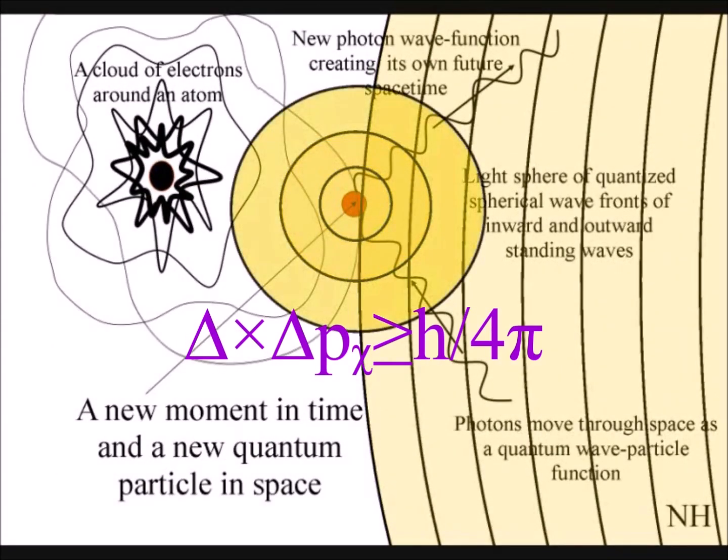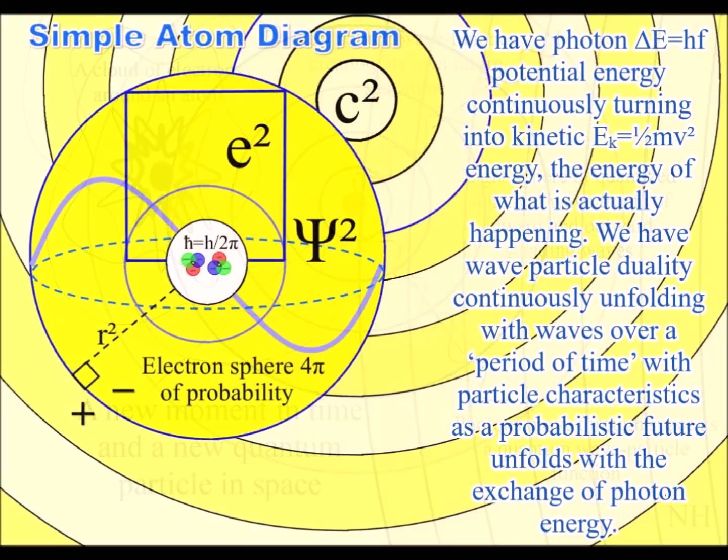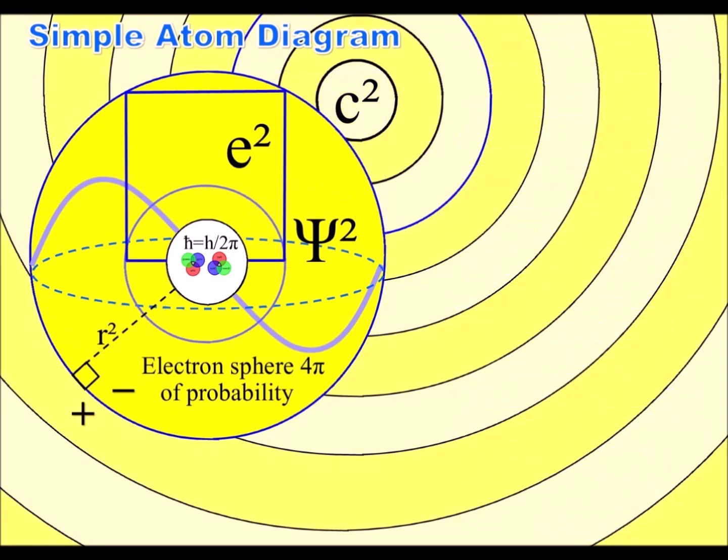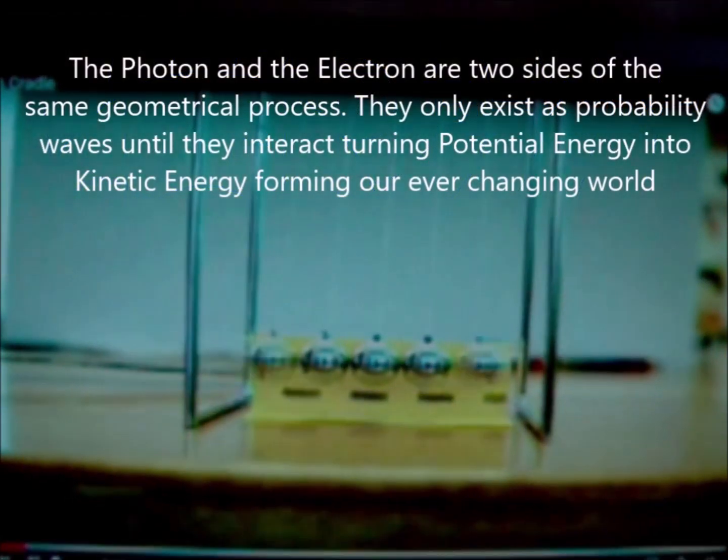We have the spontaneous absorption and emission of light photon energy, continuously transforming potential energy into the kinetic energy of matter, in the form of electrons.